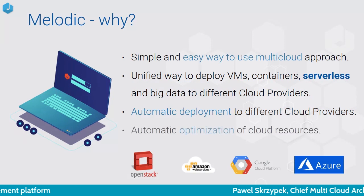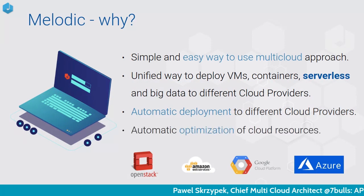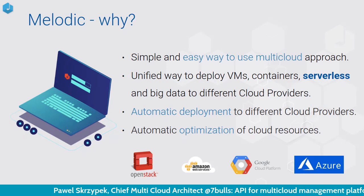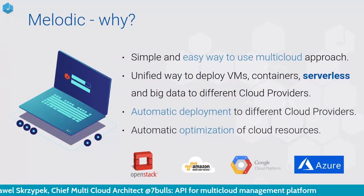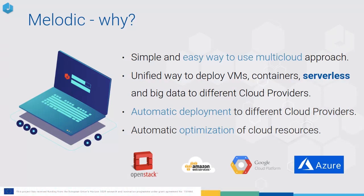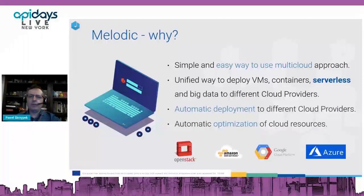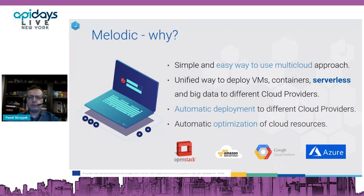The deployment is done fully automatically — our platform invokes the API of the selected cloud providers and deploys the application there. And the deployment is also optimized, so the use of cloud resources is optimized. Melodic knows what the best deployment is and deploys the application in an optimized way.